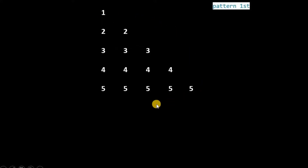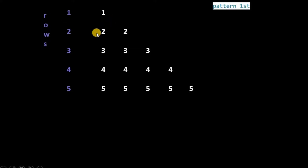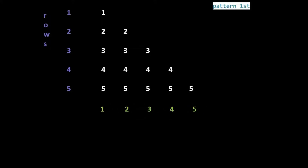This is the first number pattern. There are rows: first row, second row, third row, fourth row, and fifth row. And these are columns: first column, second column, third column, fourth column, and fifth column.